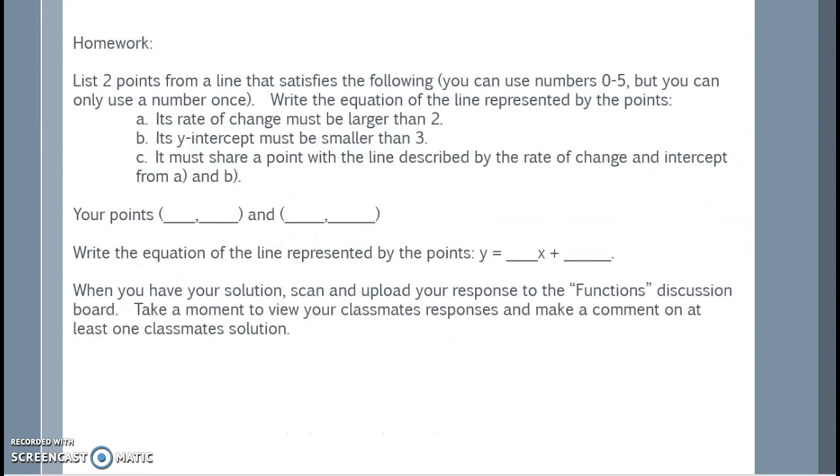Homework. List two points from a line that satisfies the following. You can use numbers 0 to 5, but you can only use a number once. Write the equation of the line represented by the points. Its rate of change must be larger than 2. Its y-intercept must be smaller than 3.